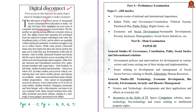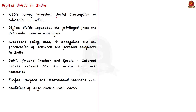This survey highlighted the poor state of computer and internet access in several states. The disparities are glaring among different economic groups, and the digital divide that separates the privileged from the deprived remains unbridged even years after the broadband policy of 2004, which recognized the low penetration of internet and personal computers in India. The delayed execution and poor penetration are painfully visible during the pandemic as students struggle to attend online classes.